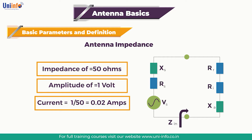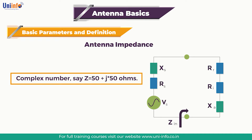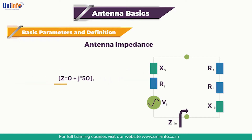Since the impedance is a real number, the voltage is in phase with the current. Alternatively, suppose the impedance is given by a complex number, say Z equals 50 plus j times 50 ohms, where j is the square root of minus 1. Imaginary numbers provide phase information. If the impedance is entirely real, that is Z equals 50 plus j times 0, then the voltage and current are exactly in phase.